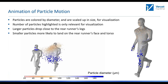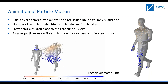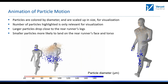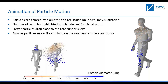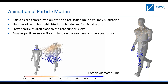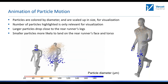This is an animation that shows the particles coming out from the front runner and spreading to the rear runner and beyond. The animation is colored by particle diameter, with particles scaled up in size for visualization so you can see them clearly. Larger particles make it to the leg of the runner, while smaller particles hit the face and torso — and you can see them getting smaller as they move toward the runner and beyond.